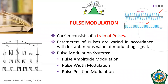In pulse modulation, the carrier is in the form of pulses instead of a sinusoidal wave. Just as we varied the amplitude, frequency, or phase of the carrier in accordance with the modulating signal, in pulse modulation we vary the characteristics of the pulsed carrier in accordance with the instantaneous value of the modulating signal. Whatever characteristic of the pulsed carrier we vary, we define that particular pulse modulation technique accordingly.